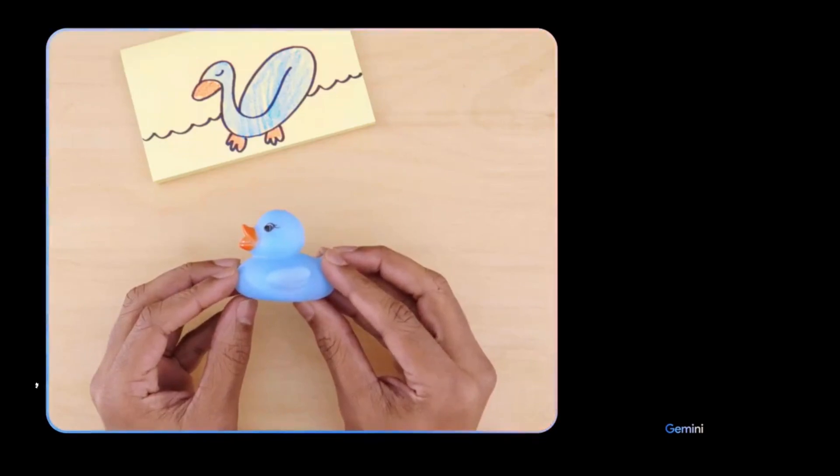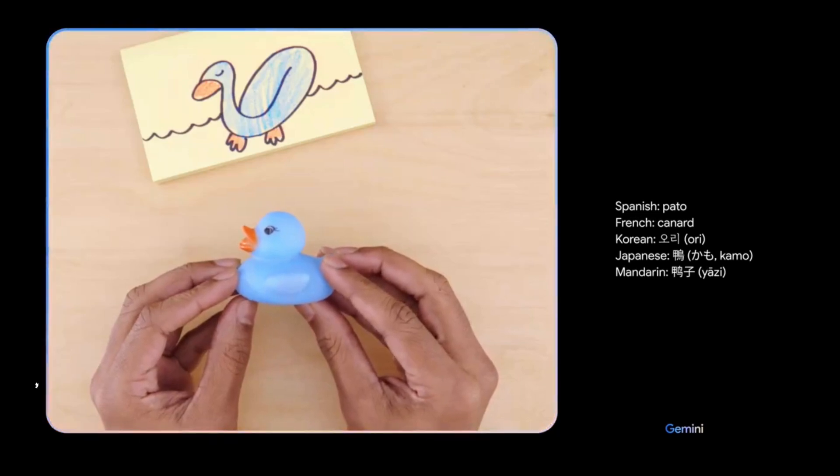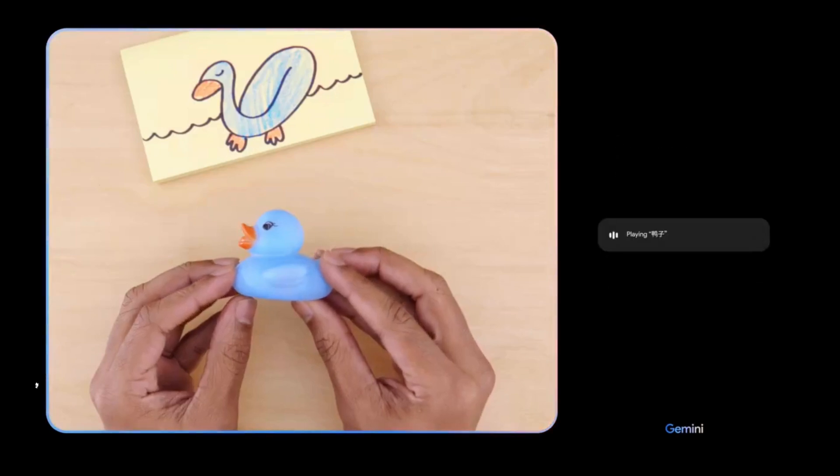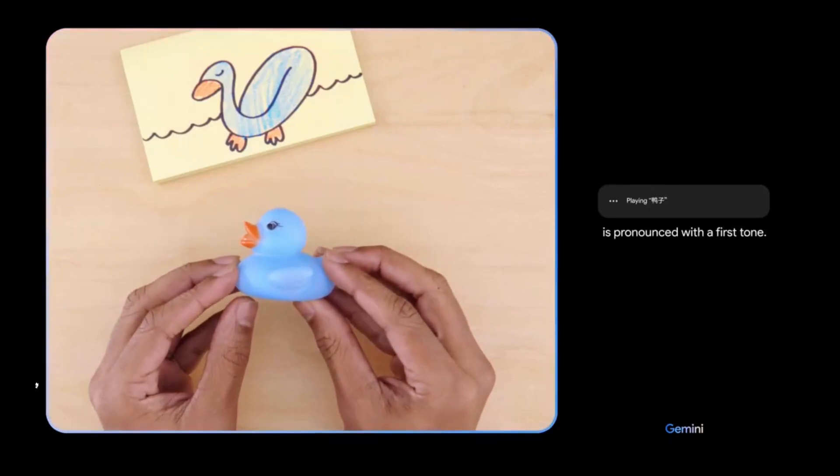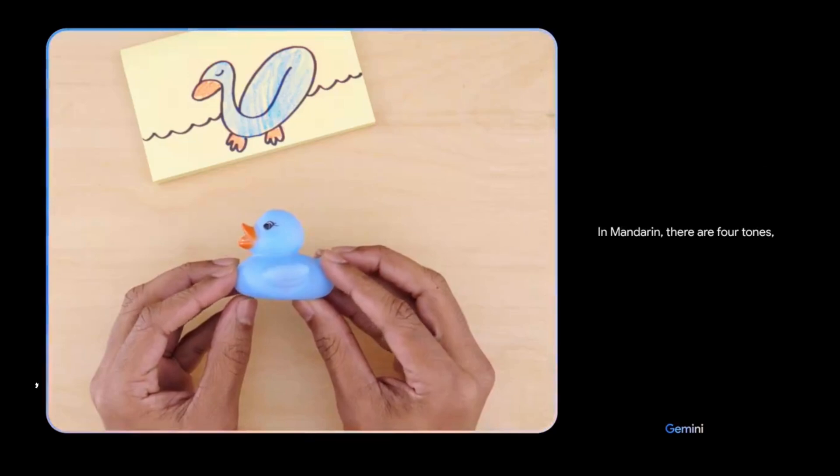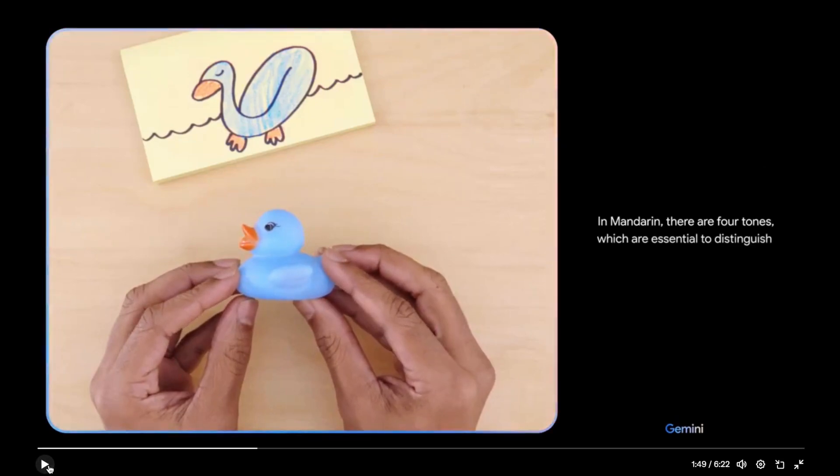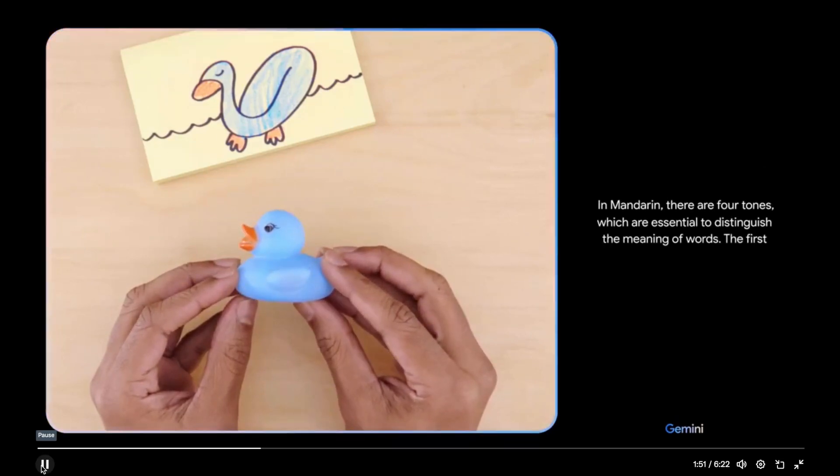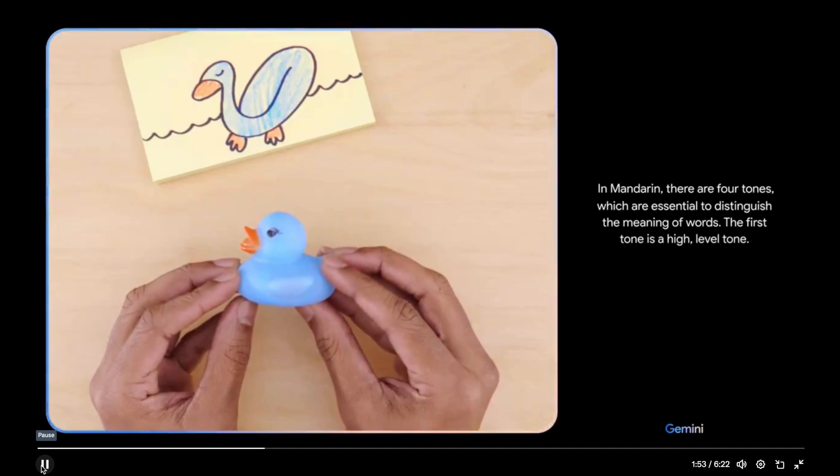Can you teach me how to say this in a different language? And give me a few options. Can you explain how to pronounce the Mandarin one? Is it yatsuh? Yatsuh is pronounced with a first tone. In Mandarin, there are four tones, which are essential to distinguish the meaning of words. The first tone is a high level tone. Oh, okay.